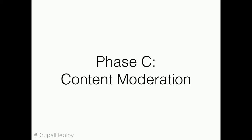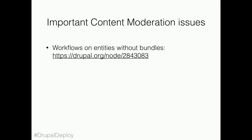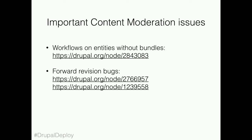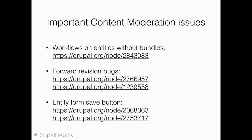Let's dive into a little bit more detail. I'm going to focus on two phases — phase C and phase G. Phase C is content moderation. We're working on enabling workflows on entities without bundles. There are two or three tricky bugs when it comes to forward revisions and forward revisions with translations that we're still tackling. A big area of discussion has also been the entity form save button — the button and design around the interface where you save entities when it comes to moderation states.